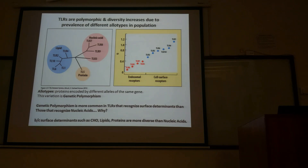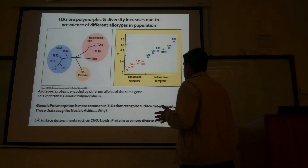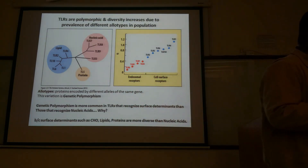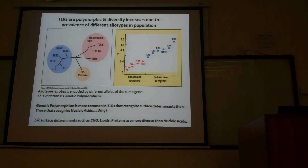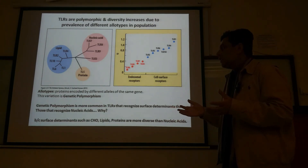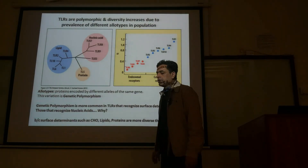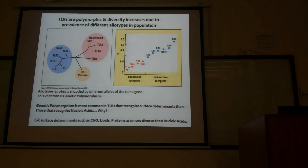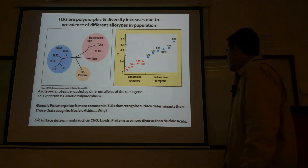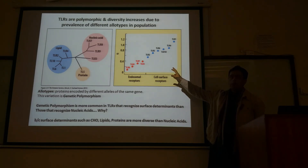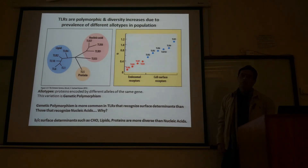Nucleic acid mutations are not very frequent, meaning nucleic acids are not subject to great change. In contrast, carbohydrates, lipids, and proteins found on the surface of pathogens change rapidly compared to nucleic acids. That is why cell surface toll-like receptors need to be more diverse than endosomal toll-like receptors — it is an understandable reason why surface receptors on immune cells show greater genetic diversity.